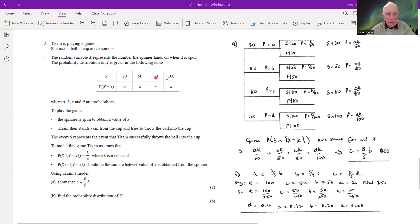We know the values of the random variable: 20, 50, 80, 100. So to play the game, the spinner is spun to obtain a value of x. Tisam then stands x centimeters from the cup, so whatever's come up on the spinner, 20, 50, or whatever, x centimeters from the cup, and tries to throw the ball into the cup.